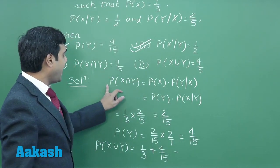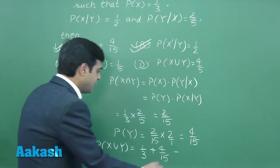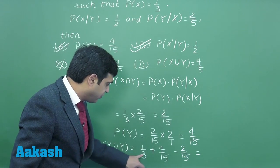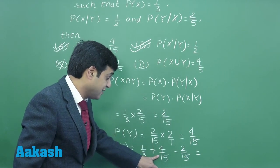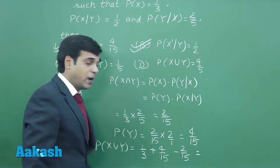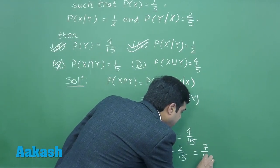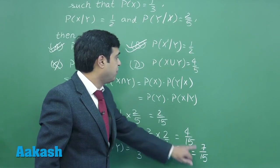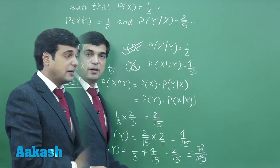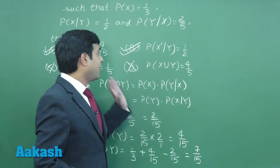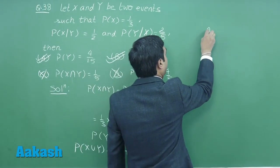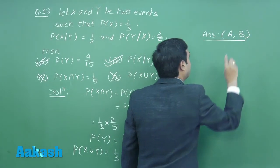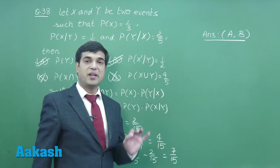Minus probability of X intersection Y, that is 2/15. So we can see this is 5/15 plus 4/15, that is 9/15, minus 2/15, giving me 7/15. So probability of X union Y is 7/15, giving me option D is not correct. So this is clear that correct options are option A and B. Let us move to the next question.